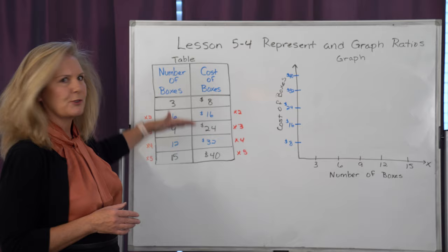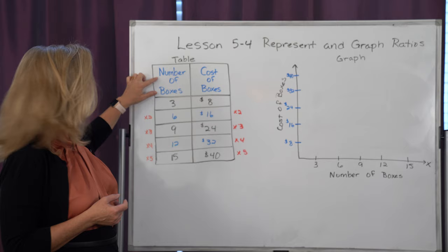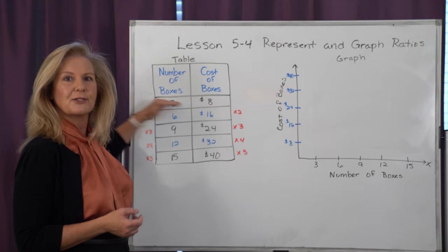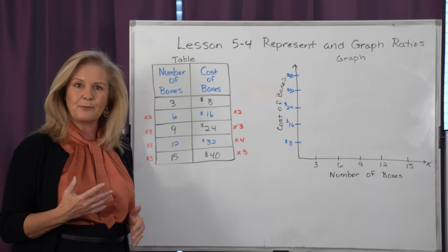If I want to take this example, I have the number of boxes compared to the cost of the boxes. My original ratio was 3 boxes that equaled $8, so it's 3 compared to 8. Now I need to find equivalent ratios, which means I need to multiply both sides by exactly the same number.